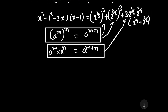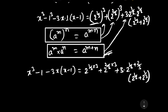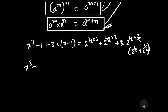Now we can write it as x cubed minus 1 minus 3x times (x minus 1). This term can be written as 2 to the power (1/3 × 3) plus 2 to the power (2/3 × 3), plus 3 times 2 to the power 1/3 times 2 to the power 1/3 times (x minus 1). Expanding: x cubed minus 1 minus 3x squared plus 3x.